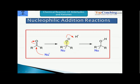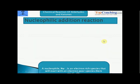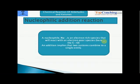This double bond between carbon and oxygen breaks, and oxygen in turn makes a bond with hydrogen. So basically, a nucleophile reacts with electron-poor species, and addition implies the two systems combine to form a single entity.